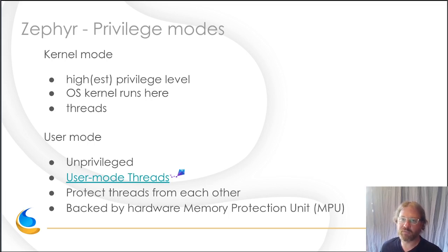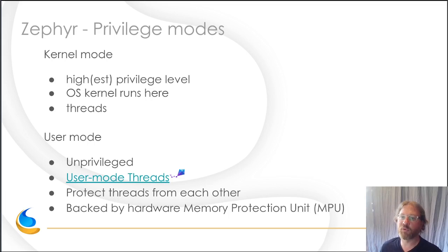One concept of Zephyr that'll be familiar to Linux users is the notion of privilege mode. Just like Linux, Zephyr has kernel mode and user mode, except unlike Linux, user mode in Zephyr is actually optional. You can run everything in kernel mode for cores that don't have any privilege separation. By default, the kernel runs at the highest privilege level, where the Zephyr OS kernel and kernel threads run. What we're interested in is adding unprivileged user mode support for RISC-V cores that have hardware support for that.